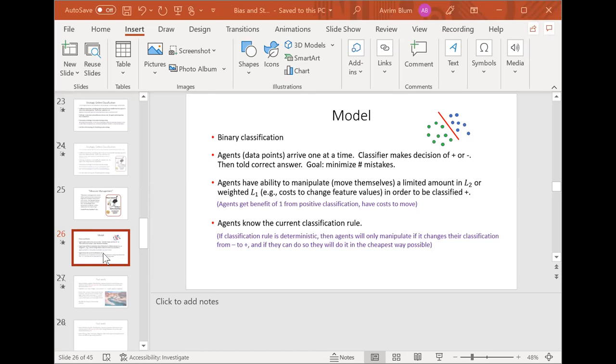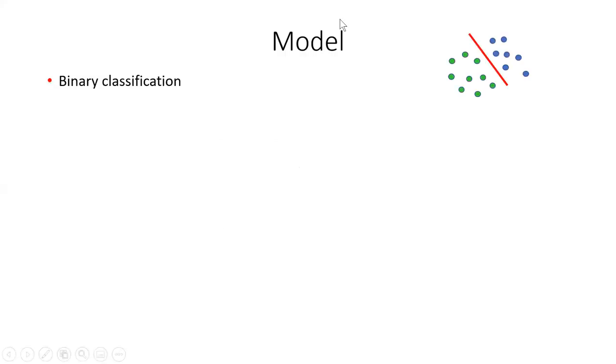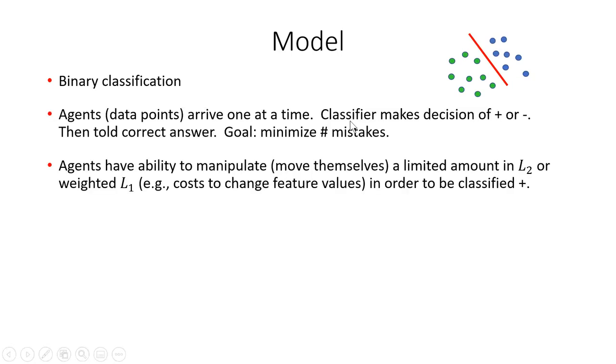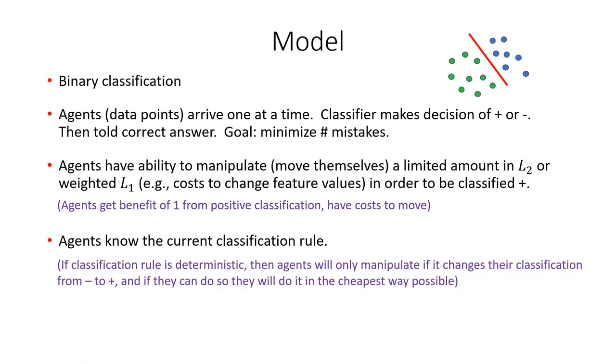My internet just died. Sorry about that. Let me get back to this. So let me give some examples — that will also help. Here we have a case with two features. Let's say agents can manipulate their X1 value (horizontal) by up to 0.9, but they can't change the X2 value. Let's imagine we see these three points cycling over and over — this is linearly separable data.